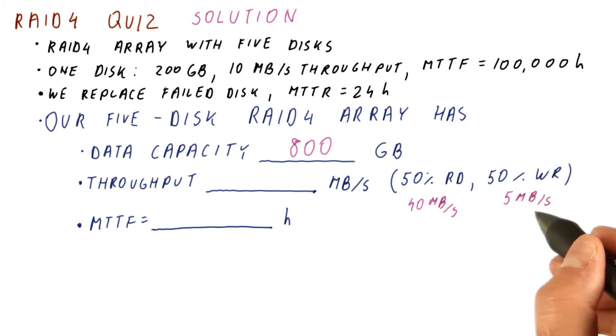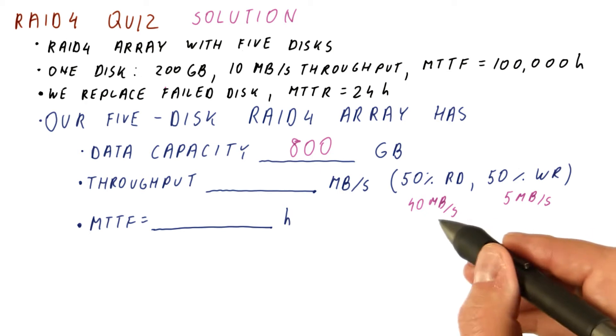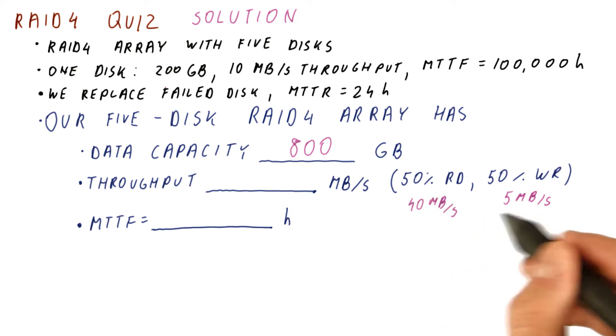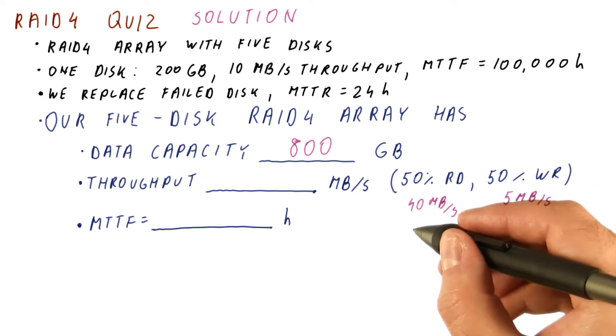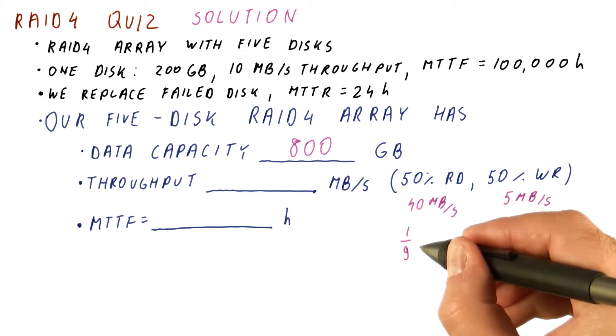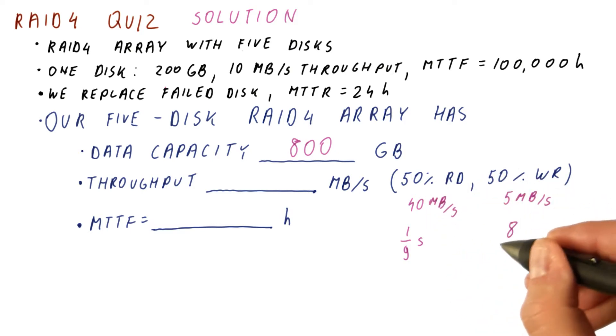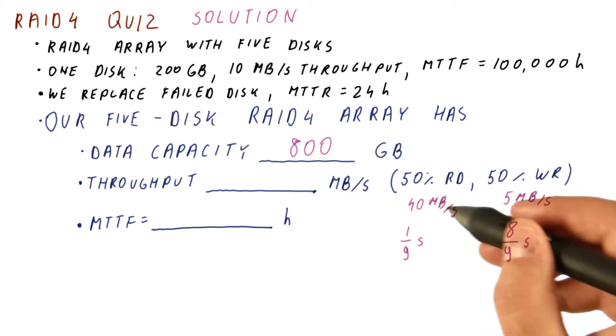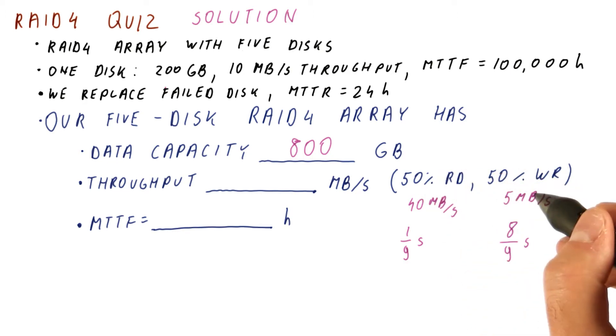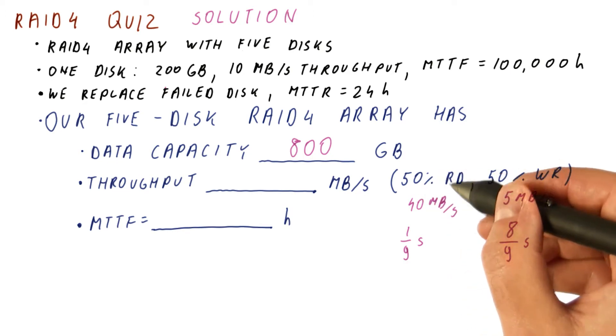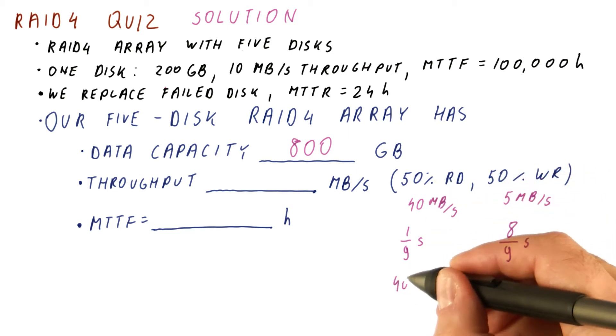So now we need to figure out what happens during one second. Well, this throughput is eight times the throughput of the writes. Which means, in every given second, one ninth of a second will be spent on reads, and eight ninths of a second will be spent on writes. That way we spend eight times as much time on writes as we do for reads, which allows us to do the same number of reads and writes.